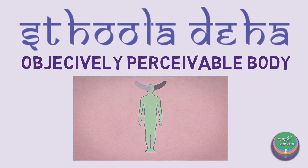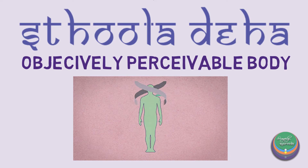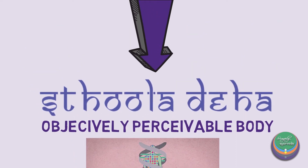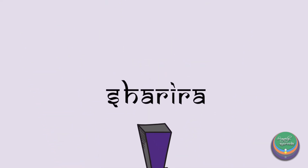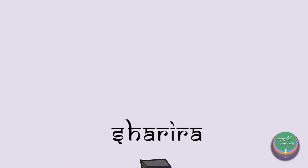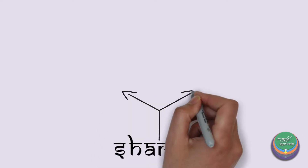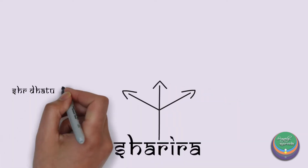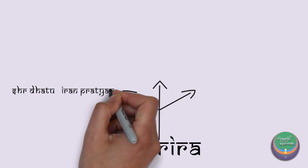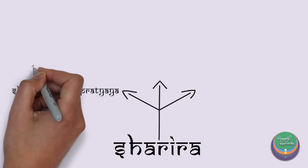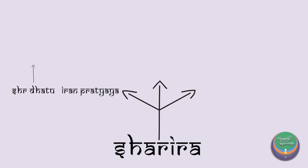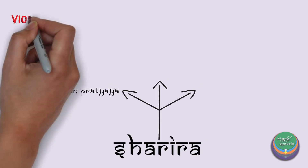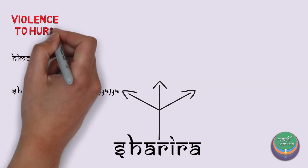To understand Sharira in detail, let us first look into the origin or derivation of the term Sharira. There are three references which state the origin of the word Sharira. The first is Sharira plus Iran pratyayah, where Sharira means Himsayam, which means violence — that is, to hurt or destroy.